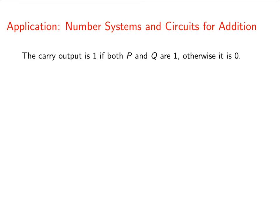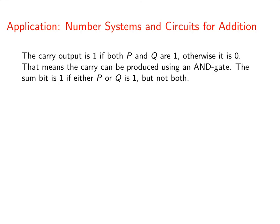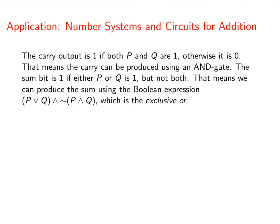The carry output is 1 if both P and Q are 1, otherwise it's 0. That means we can produce the carry with an AND gate. The sum bit is 1 as long as P or Q is 1, but not both. So we can use this expression: P or Q and the negation of P and Q. If you remember, this is called the exclusive OR.